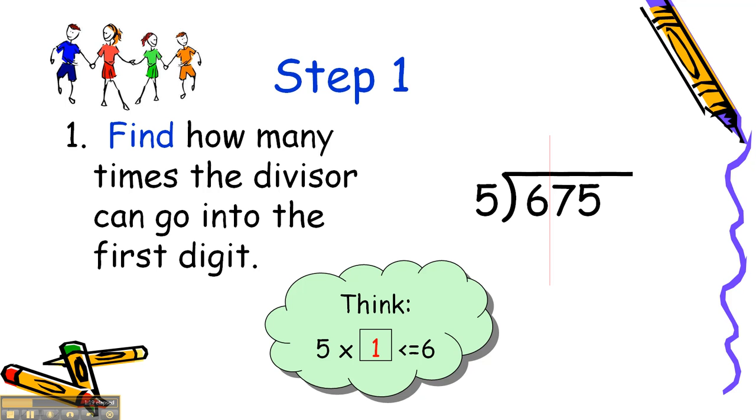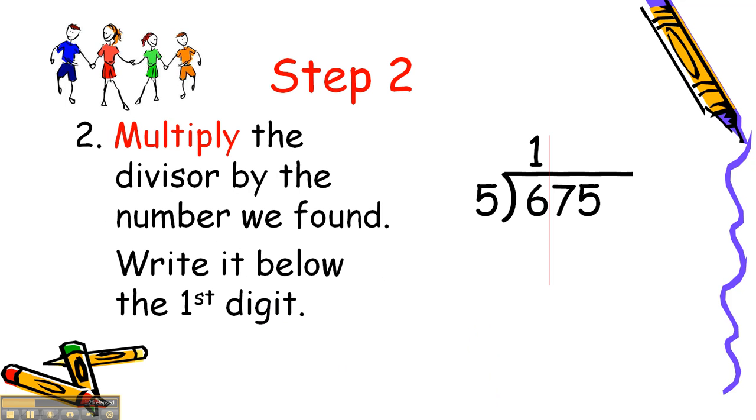We go to step 2. We think of mother. Multiply the divisor by the number we found and write it below the first digit. We're going to think 5 times 1 and then write it below. And that's going to be 5. That's 5 times 1 is 5.